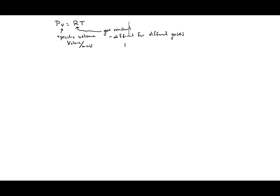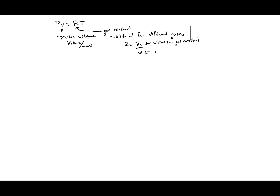R is equal to the universal gas constant over the molar mass. You can look up the universal gas constant — for example, on Wikipedia under 'gas constant' you'll get values for Ru, the universal gas constant. Some examples are 8.314 joules per kelvin·mole.